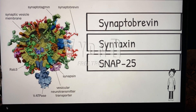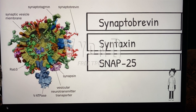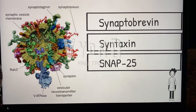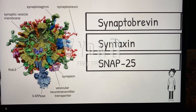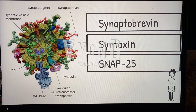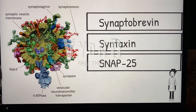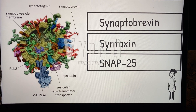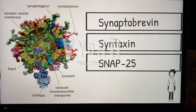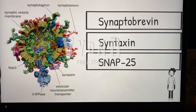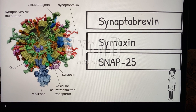The second SNARE is syntaxin, which is a transmembrane protein located on the plasma membrane and is a T-SNARE. SNAP25 is also a T-SNARE and is anchored to the cytoplasmic base of the plasma membrane via lipid modification.